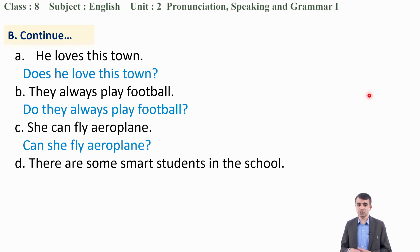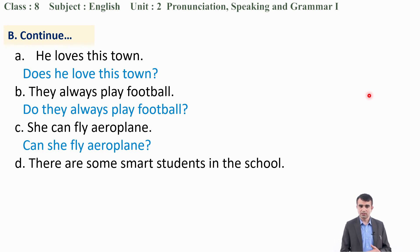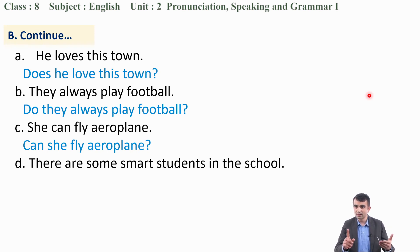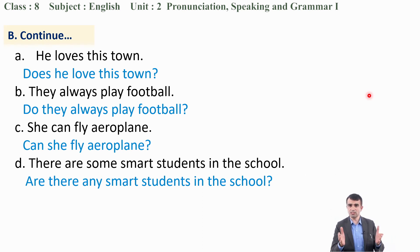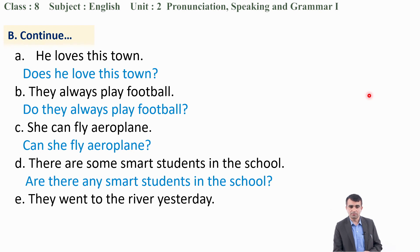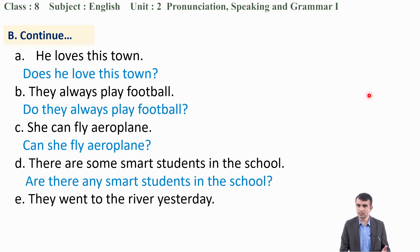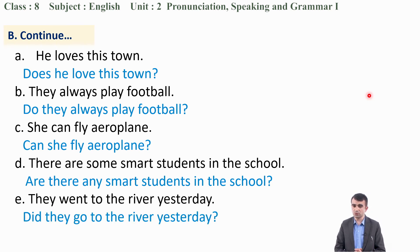D: 'There are some smart students in the school.' The question form is 'Are there?' — and remember to change 'some' to 'any': 'Are there any smart students in the school?' E: 'They went to the river yesterday.' 'Went' is past tense, so use 'did' and base form: 'Did they go to the river yesterday?'